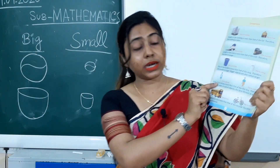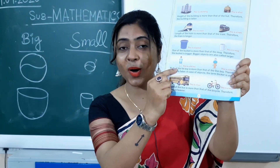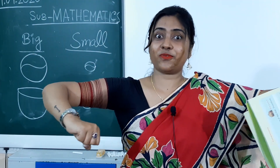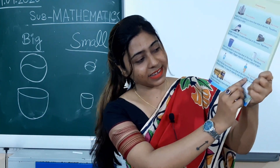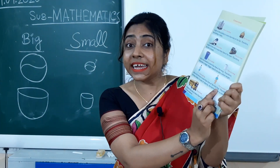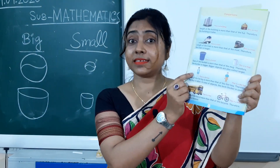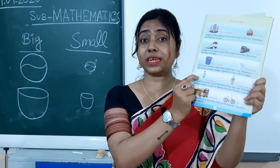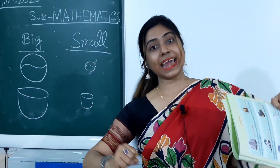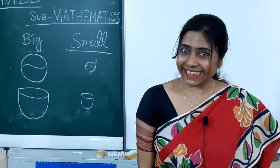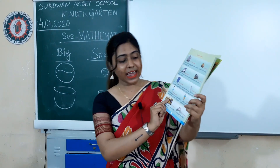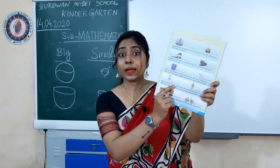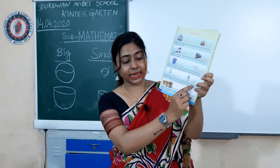Next one: this is a fat boy. This is fat and this is thin. You can also know this as thick and thin. So this is fat and this is thin.